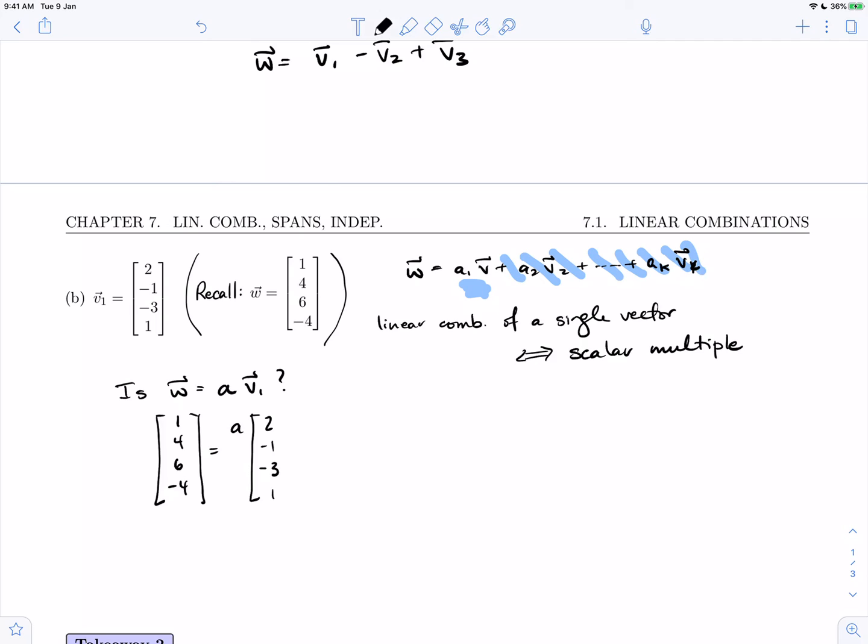Which is the linear system: 2a equals 1, minus a equals 4, minus 3a equals 6, and minus 4a equals 1. We can see right away from the first two equations, a is one half from the first, a is minus 4 from the second. That makes this system inconsistent.